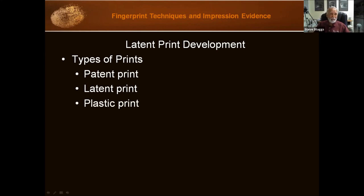Then there are plastic prints. A plastic print is created when the substrate is pliable enough at the time of contact to record the three-dimensional aspects of the friction skin. These impressions are formed when the raised friction ridges are physically pushed into the substrate, creating a mold of the friction skin ridge structure. That could be clay, putty, soft wax, melted plastic, heavy grease, or tacky paint — all substrates that could give you plastic impressions.